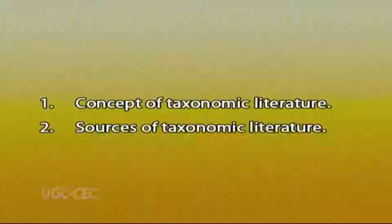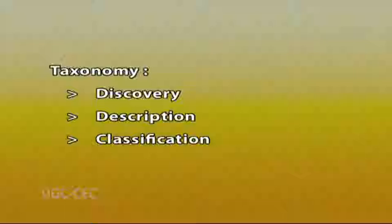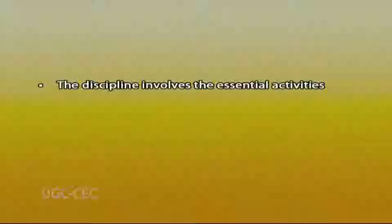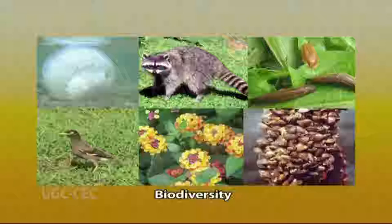Let us start with the first component: what is taxonomic literature? In earlier lectures you might have heard about the word taxonomy. It is a scientific discipline, a basic discipline of biological sciences that deals with the discovery, description, and classification of living organisms. The discipline involves the essential activities of scientific identification and nomenclature of living organisms, which is crucial for the scientific communication of biodiversity throughout the world.